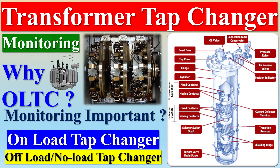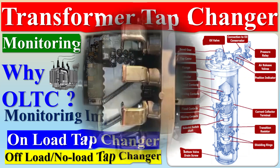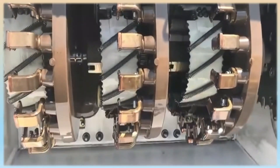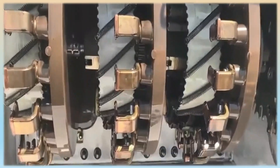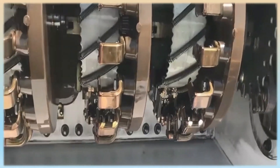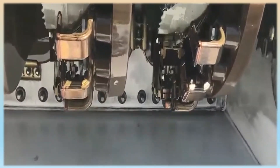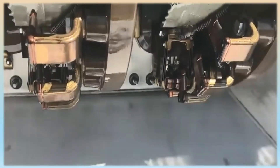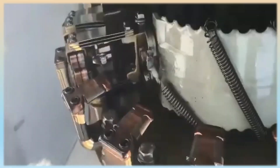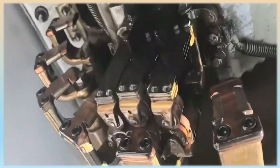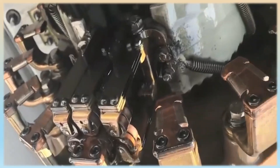Tap changers are devices that can increase or decrease the output secondary voltage by changing the turn ratio of primary or secondary winding. A tap changer is usually installed on a high voltage section of a two-winding transformer due to the low current in that area. The changers are also provided on high voltage windings of an electrical transformer if there is sufficient control of voltage.